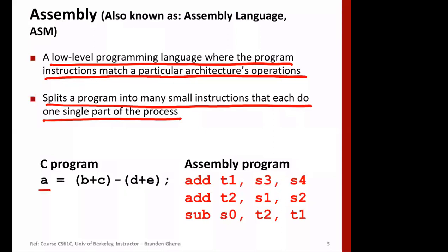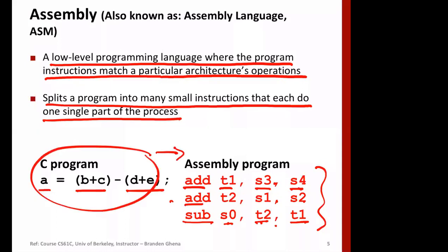For example, for the C language expression A = B + C − D + E, the assembly language program will have multiple instructions. The first instruction adds S3 and S4, storing the result in T1. The second instruction adds S1 and S2, storing the result in T2. The third instruction subtracts T1 from T2, moving the result to S0, which is A. So a C program converts into a corresponding assembly program with multiple instructions.